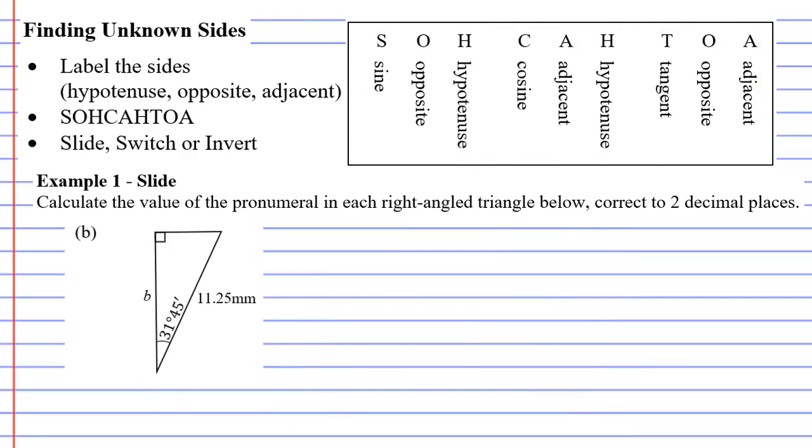With question B, we're going to start by labeling the sides. So opposite the right angle is the hypotenuse. Opposite the marked angle is the opposite. And finally, your adjacent, which is next to the marked angle. Out of these three, I'm going to cross off the O, because the O doesn't have any numbers or letters next to it. So we have A and H.